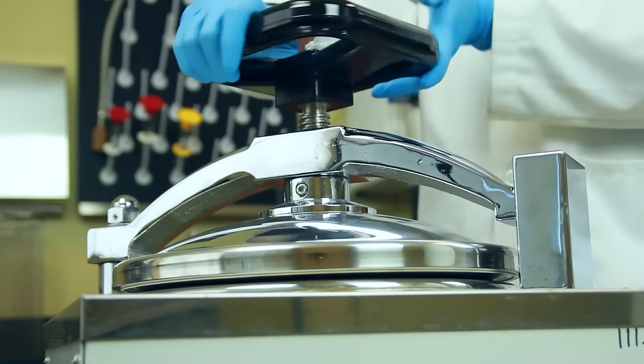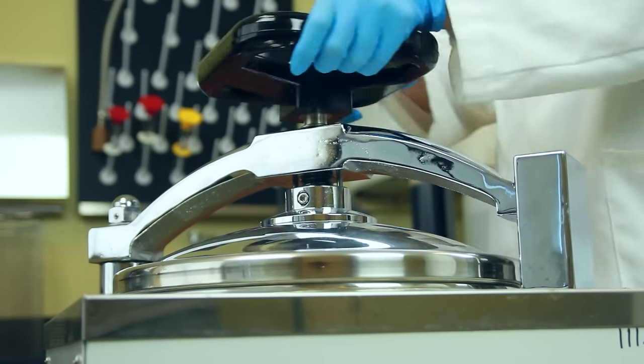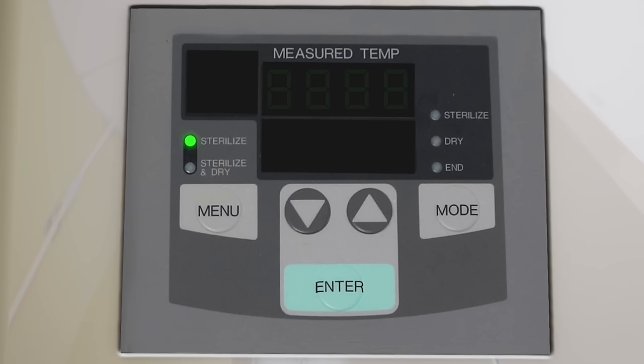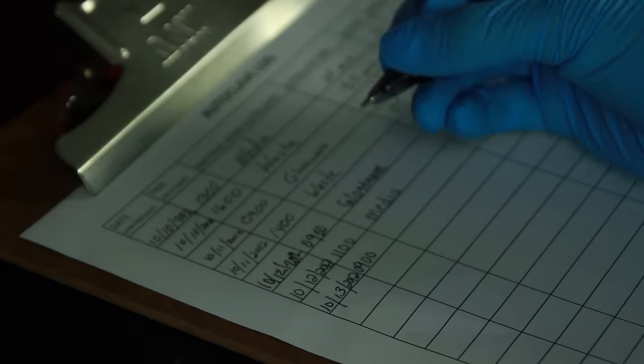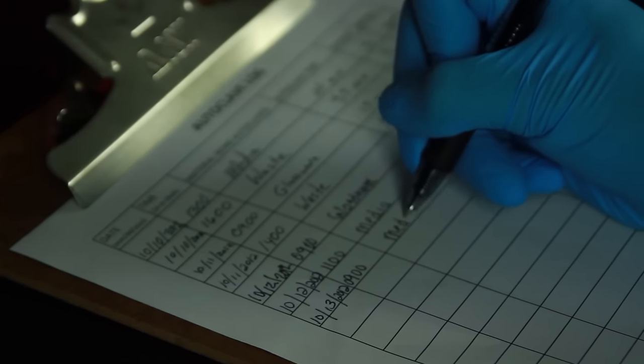close the lid, and turn the handle to create an airtight seal. Use the control panel to set the mode to sterilize. The temperature to 121 degrees Celsius will run this cycle for 17 minutes. While it's running, enter the date and time and the operation details in the log and initial.